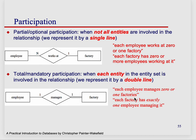So what is the difference? I'm going to explain it first. Total is mandatory — we say we don't want, and can't have, the case of zero. And if you can't have the case of zero, you use the double lines. If we read it the first way, it reads as expected: each employee manages zero or one factories. That makes sense — you either don't manage any, or you manage one.